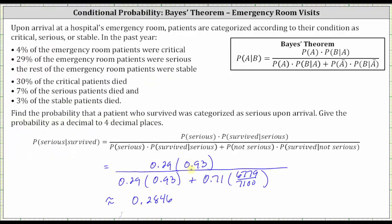For this example, using Bayes' theorem was a little tricky because of the last conditional probability — the probability the patient survived given they were classified as not serious. To find this probability, we did have to use the table. I hope you found this helpful.